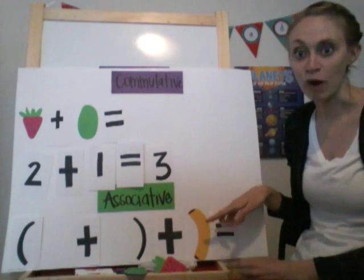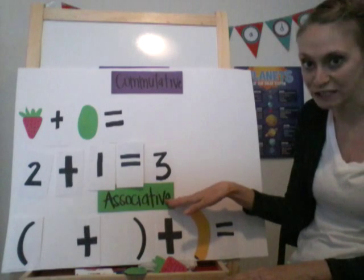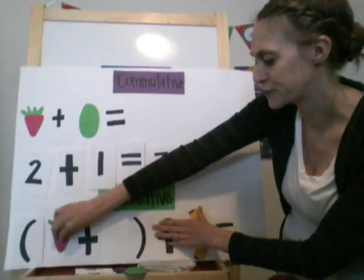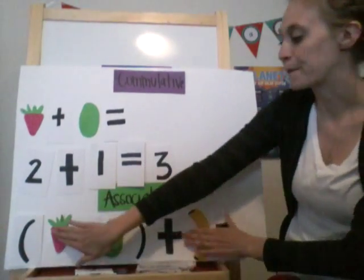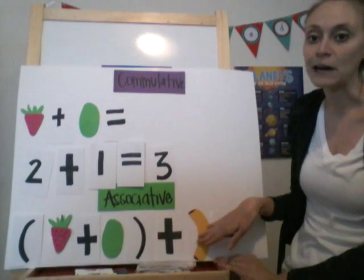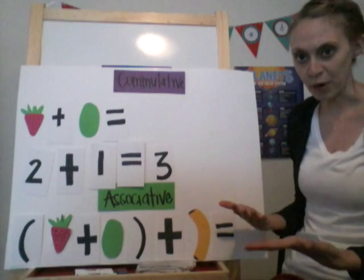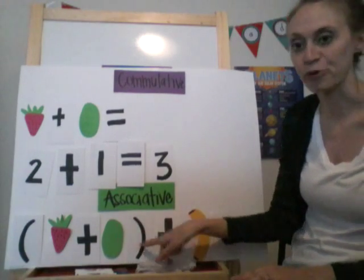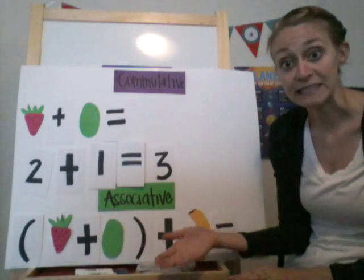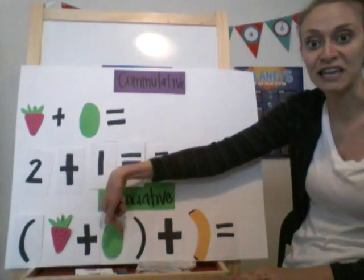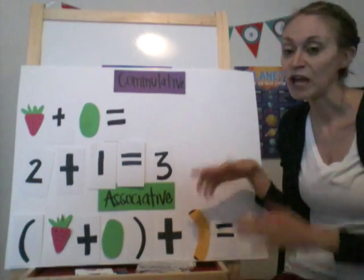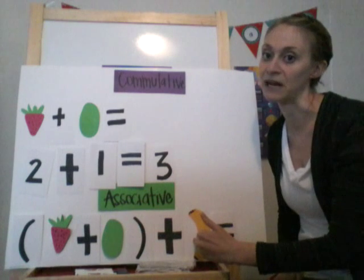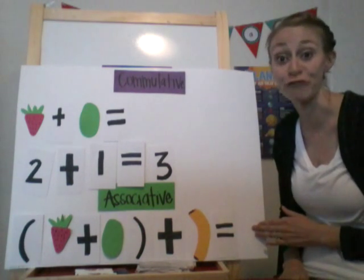Now let's go to our next property or strategy, which is the associative property. I'm going to keep going with my fruit here. Now I have my strawberry and my kiwi like before, but I'm adding a banana to it. With the associative property, it's similar to the commutative property, but you'll notice that we have parentheses. When you see parentheses, you need to add those numbers together before you add this in. So I would add my strawberry and my kiwi together, and then add my banana in, giving me three pieces of fruit altogether.